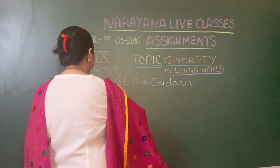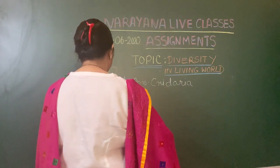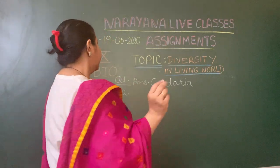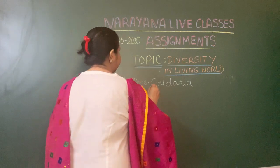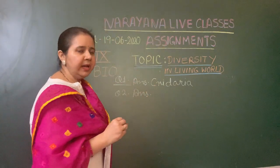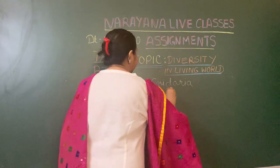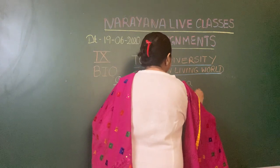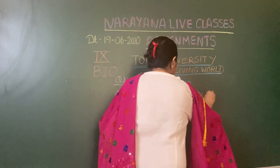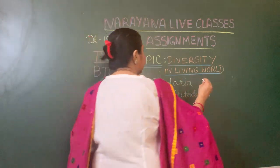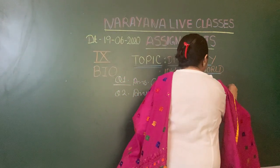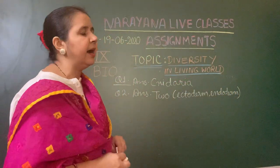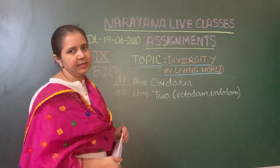Question number two asks: in Cnidaria, the body is made up of dash layer of cells. The answer is two layers of cells — the outer ectoderm and the inner endoderm. They don't have three layers of body organization; they have just two layers, ectoderm and endoderm, separated by a layer termed as mesoglea.